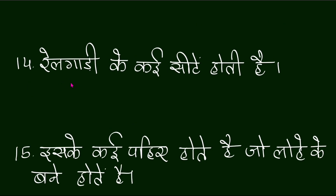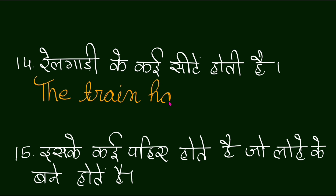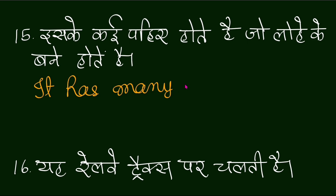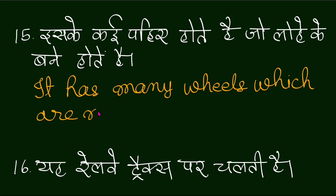Rail gaadi ke kai seeti hain — 'The train has many seats.' Iske kai pahiye hote hain jo lohe ke bane hote hain — 'It has many wheels which are made of iron.'